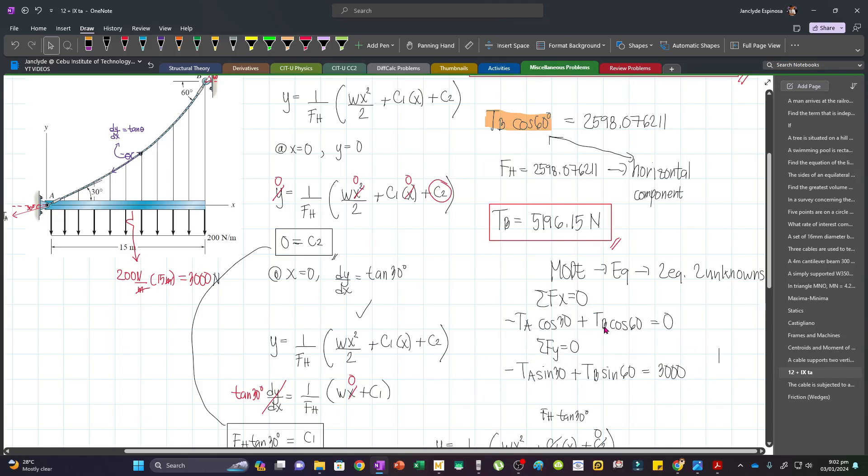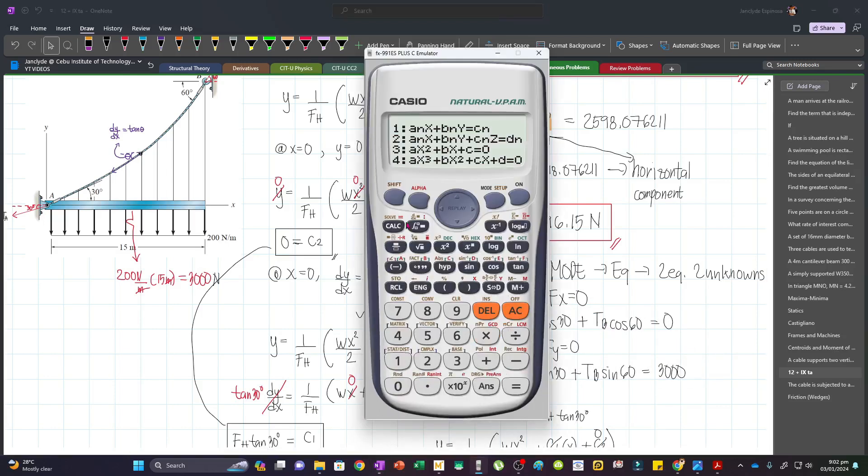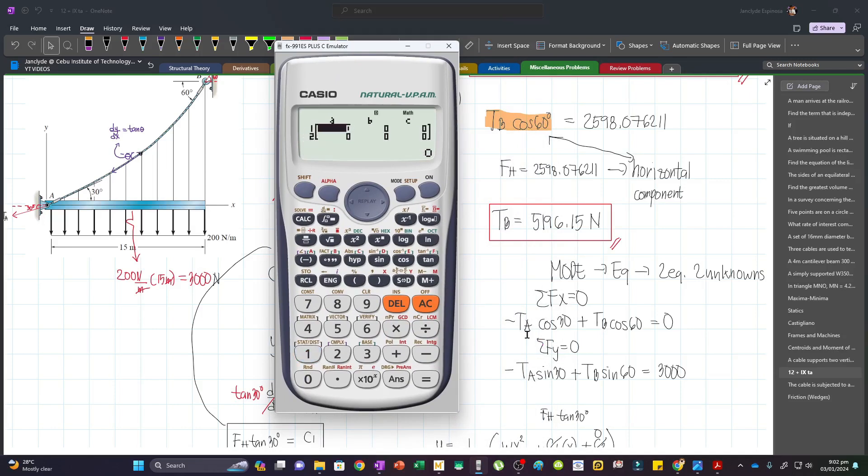To get TA and TB, we will just use our calculators. Press 1, and then let's try to input the coefficients. So for TA, we will input this at A. The coefficient of TA is negative cosine 30.